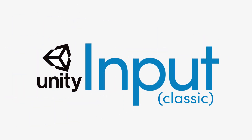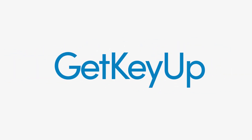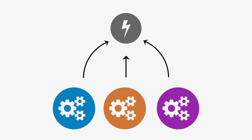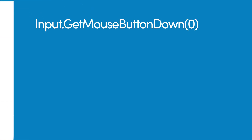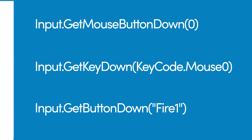The Unity input system is a common point of confusion for Unity newcomers and veterans alike, and it's no surprise. We have GetKey, GetKeyDown, GetButton, GetKeyUp, GetButtonDown, GetMouseButton, GetButtonUp, GetMouseButtonDown. Many of these do similar things, and some even the same things. For example, if we want to track when the left mouse button is clicked, we could do it three different ways — and out of the box, all three do exactly the same thing.